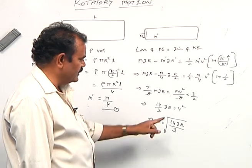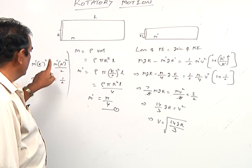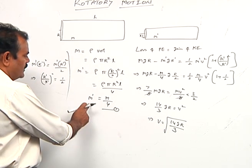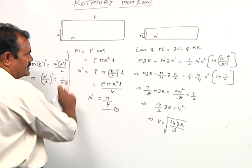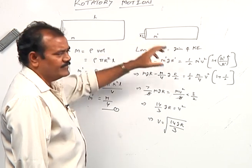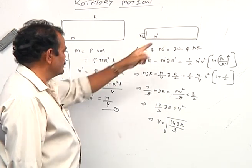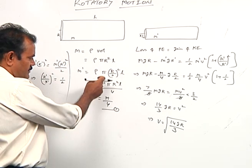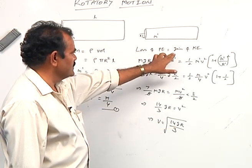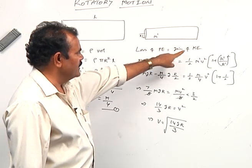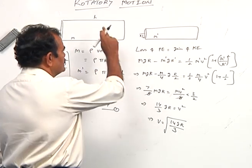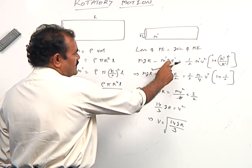To summarize: the carpet is treated as a solid cylinder. Initially m' = m = density × volume. In the next state, r' = r/2 and mass changes, giving m' = m/4. The approach is conservation of energy: loss of PE equals gain of KE. Loss of PE is mgr, and after rolling up it becomes m' g r'.